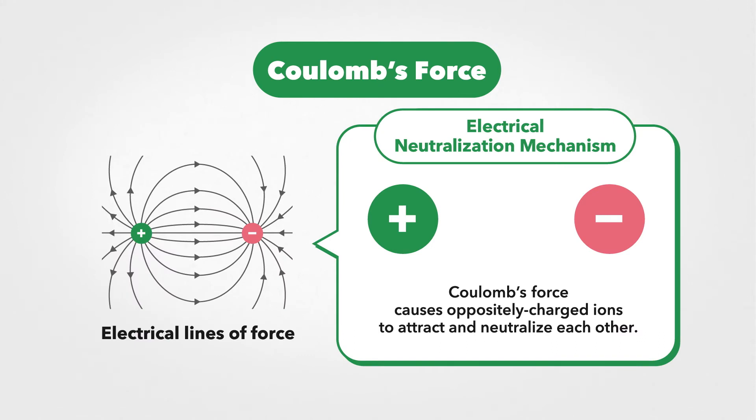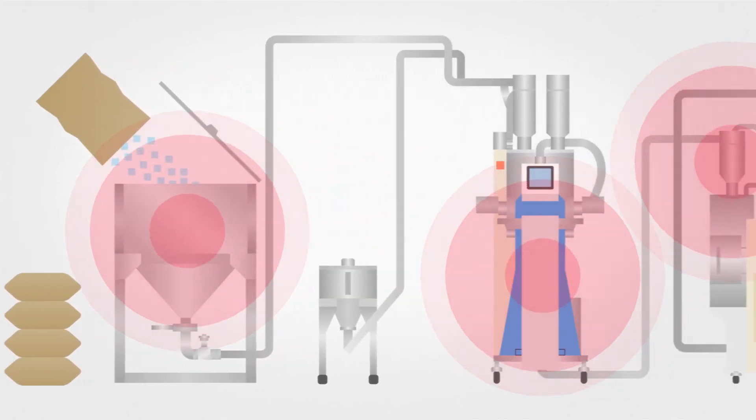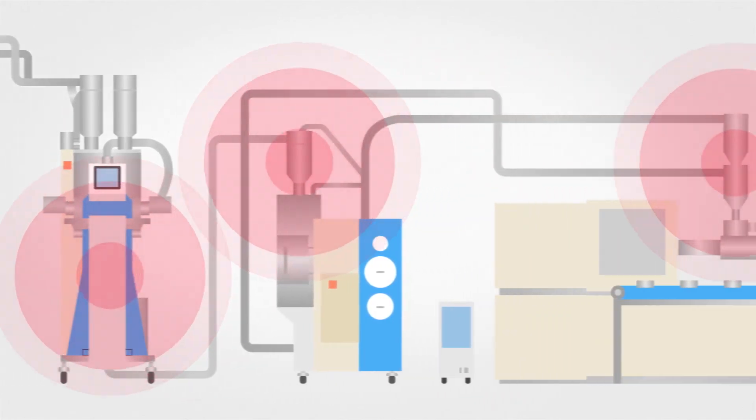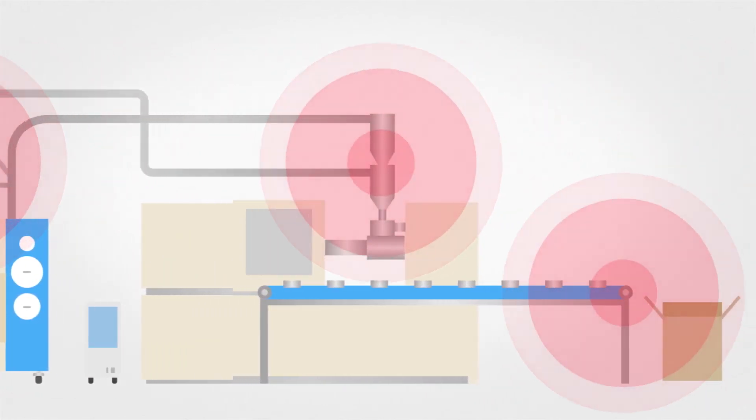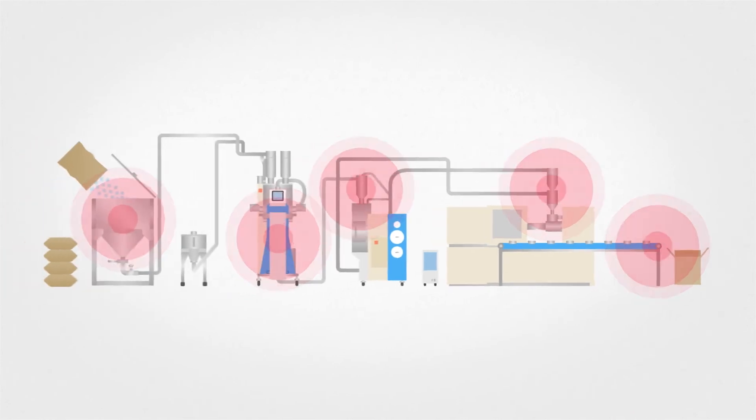A static eliminator emits ions on electrical lines of force, which neutralize oppositely charged ions when they encounter them. This type of static eliminator can be installed at any stage of the plastic molding process.